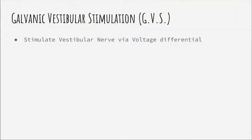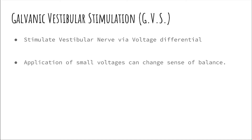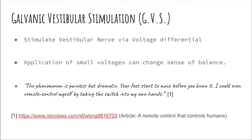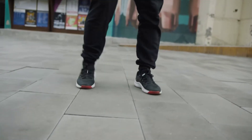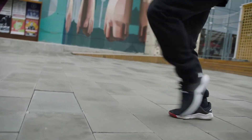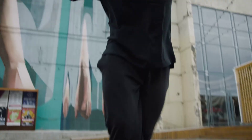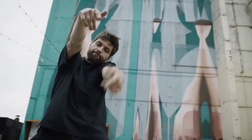A known way of controlling the vestibular system is via a method known as galvanic vestibular stimulation. According to Wikipedia, galvanic vestibular stimulation, or GVS for short, is the process of sending specific electric messages to a nerve in the inner ear that maintains our balance. According to a 2005 article in NBC News, a patient who underwent a GVS procedure was quoted as saying: 'The phenomenon is painless but dramatic. Your feet start to move before you know it. I could even remote control myself, taking the switch into my own hands.'